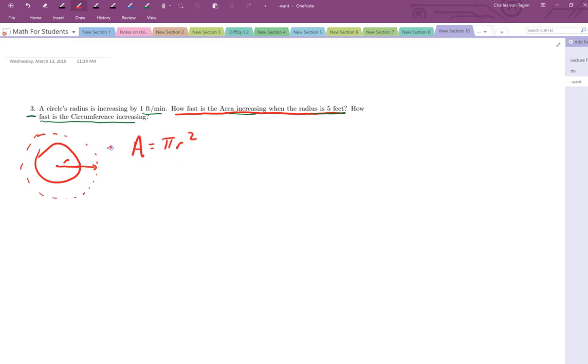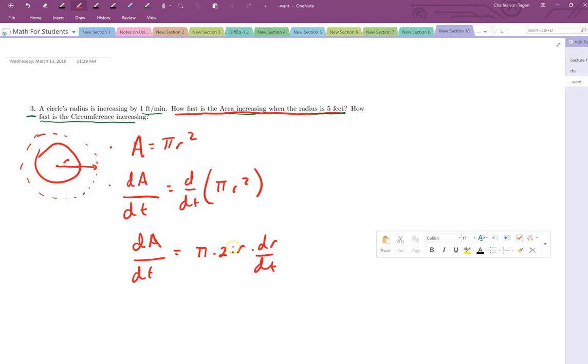So we've come up with a formula. That's actually the hardest step. Then we implicitly differentiate both sides with respect to t. So that gives us dA/dt is equal to pi times 2 times r times dr/dt. Remember pi is just a constant. It comes along for the ride. What's the derivative of r squared? Well, it's 2r, but then by the chain rule, we have to multiply that by dr/dt.